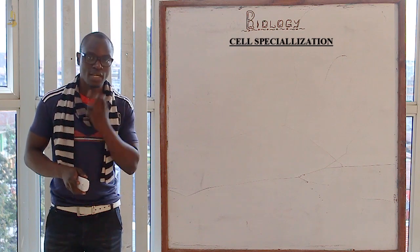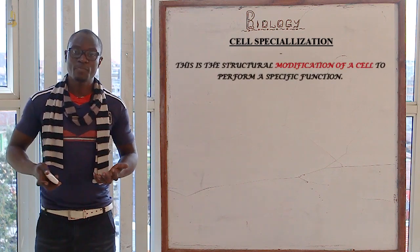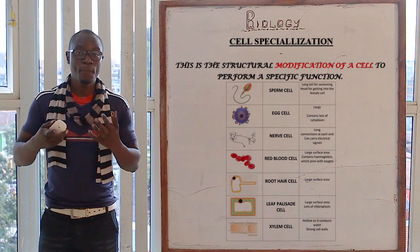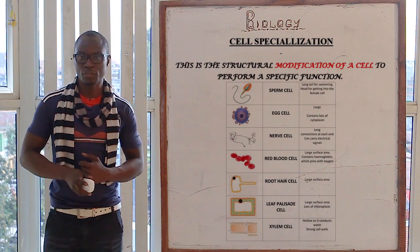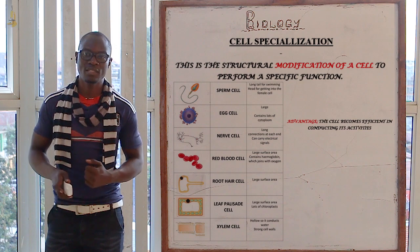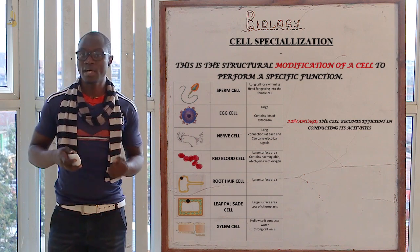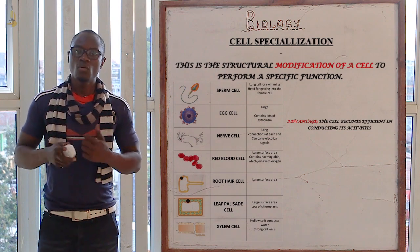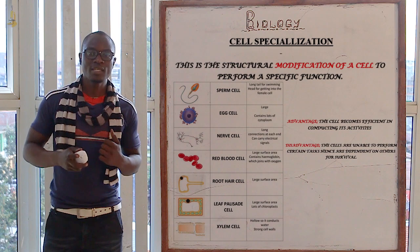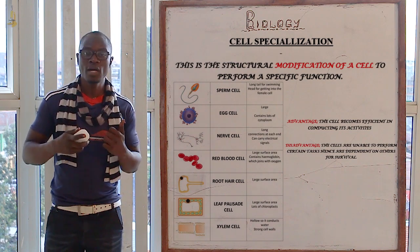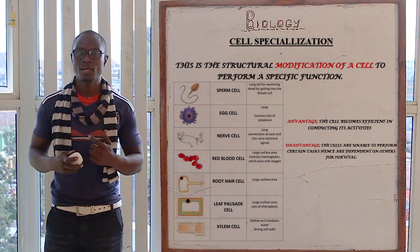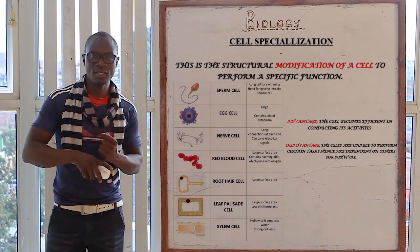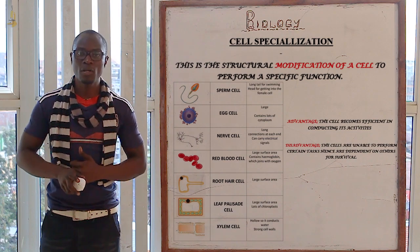Let's now go to cell specialization and define what it is. Cell specialization is the modification of a cell to be able to perform a specific function. The first advantage is that the cell becomes efficient in conducting its activities. A disadvantage is that cells are unable to perform certain tasks and therefore depend on other cells. For example, the red blood cells cannot manufacture their own food, so they depend on other cells to nourish themselves.